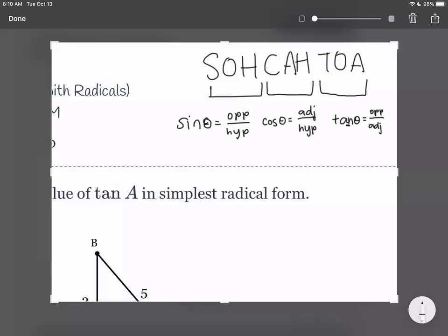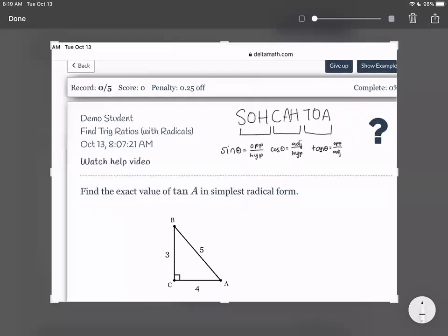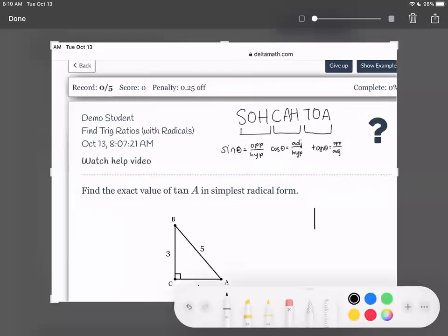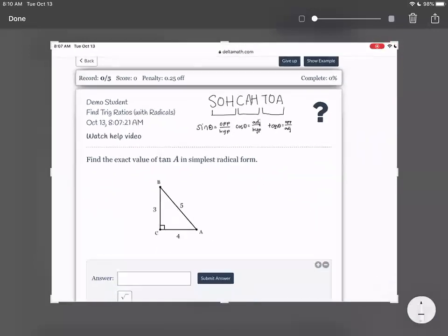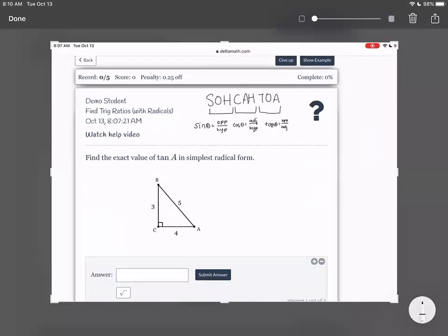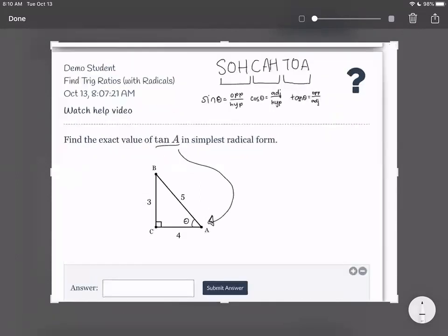Okay, so let's zoom out so that we can see our problem again. Find the exact value of tangent A in simplest radical form. So when they say tangent A, the A refers to this corner. So we're talking about this angle, because that's the corner of A. So for this angle, you get to label these three sides.